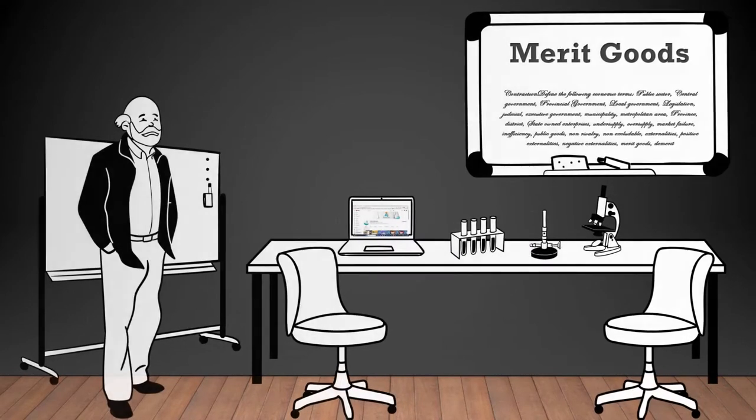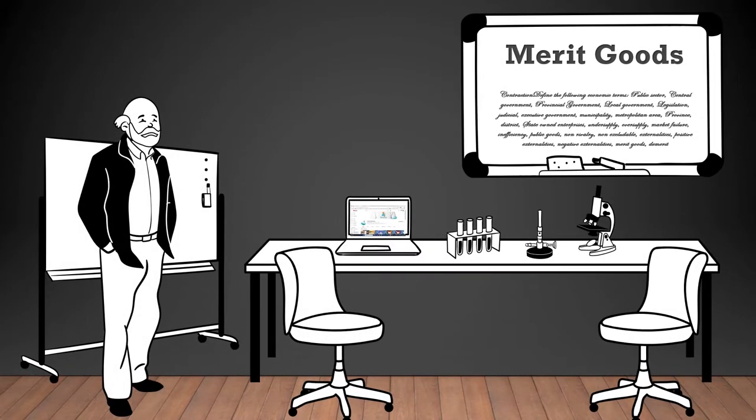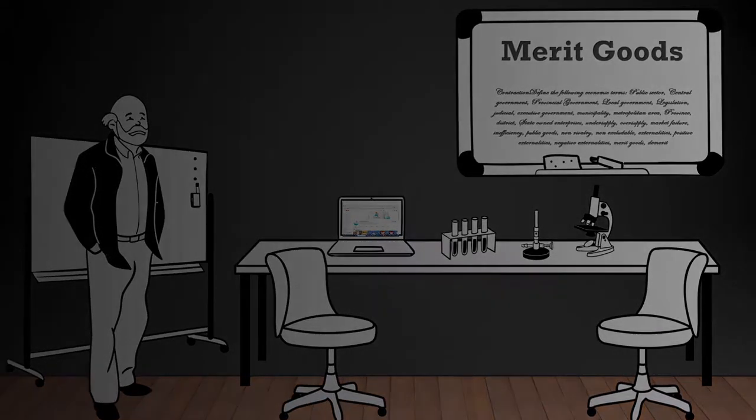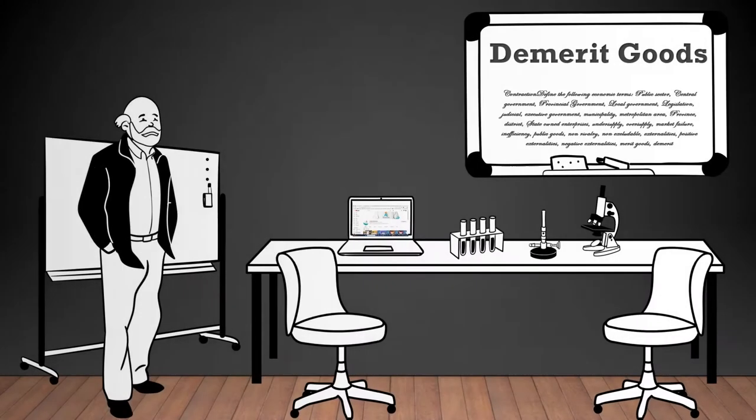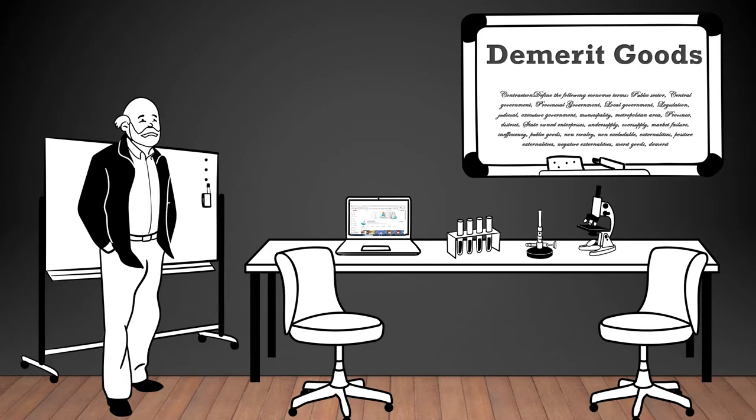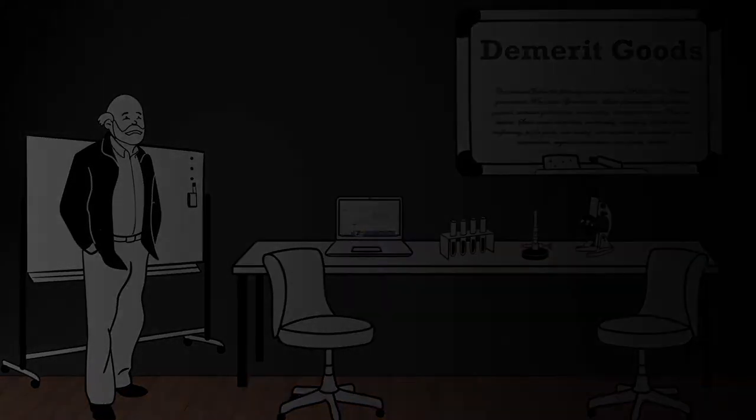Merit goods: goods and services that are deemed to have a positive impact on society and are under-consumed in the market. The government may subsidize or provide them to ensure adequate consumption. Demerit goods: goods and services that are considered harmful to individuals or society and may be over-consumed. The government may discourage their consumption through taxes or regulations.